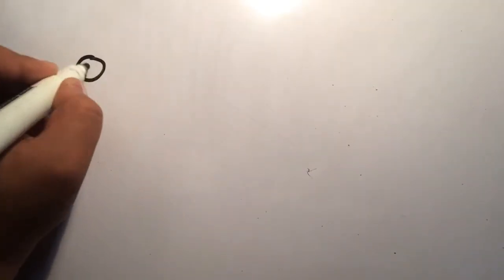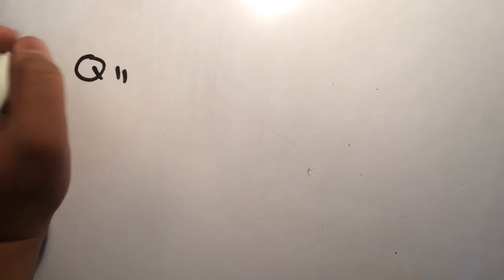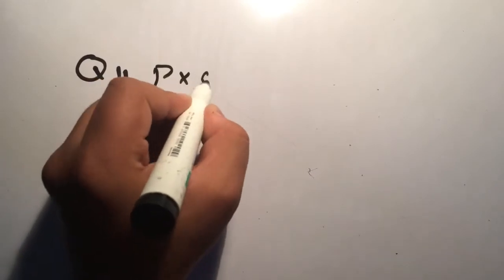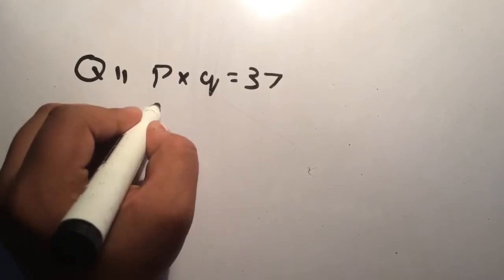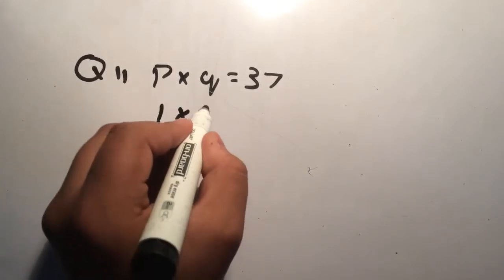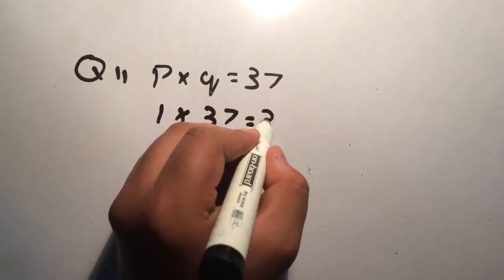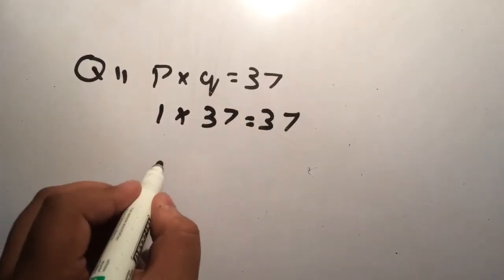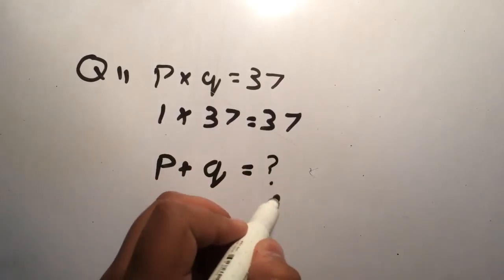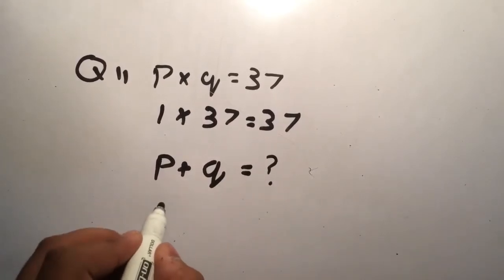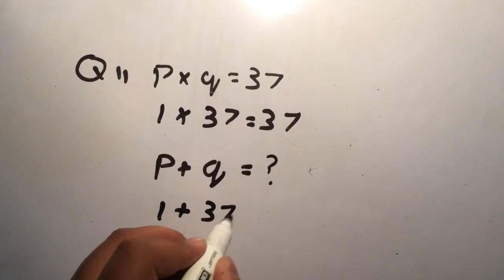And then guys, come to question 11. Question 11 is: if p and q are whole numbers such that p into q is 37, find the value of p plus q. So p into q is 37. Let's take p equals 1 and q equals 37, so it will be 37. They said what is the answer if p plus q. So it's 1 plus 37 equals to 38.